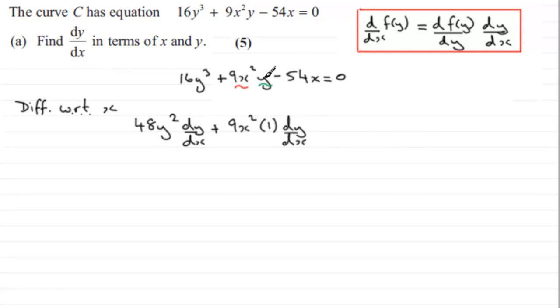And then using the product rule, we plus, and then we take this part now, y, and multiply it by the differential of 9x² with respect to x. Well, that's just going to simply be 18x.